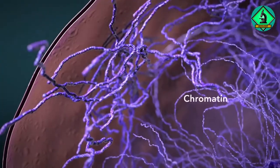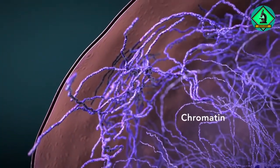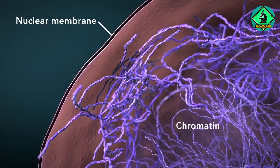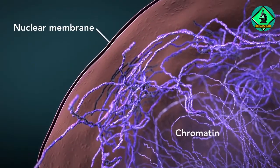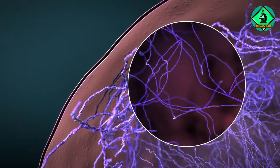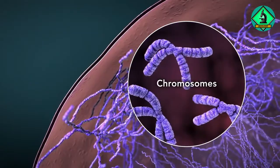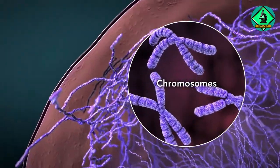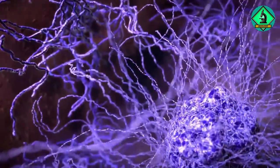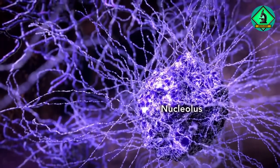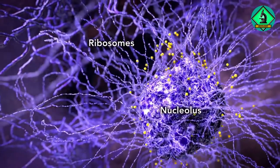Chromatin is the tangled spread-out form of DNA found inside the nuclear membrane. When a cell is ready to divide, DNA condenses into structures known as chromosomes. The nucleus also contains a nucleolus, which is a structure where ribosomes are made.